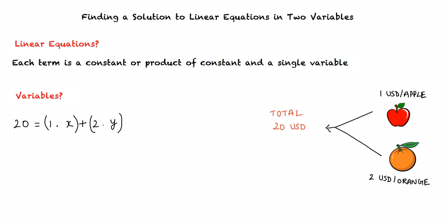The total cost, 20, depends upon x and y. If Michael had purchased an extra orange or apple, the cost would not have been $20, but it would have been something higher than $20.